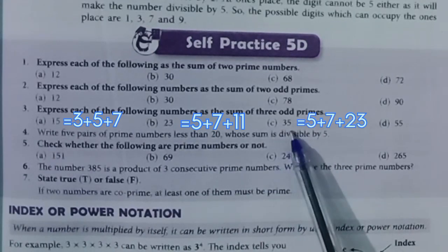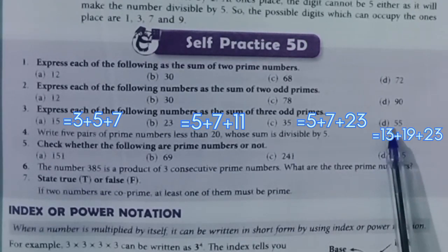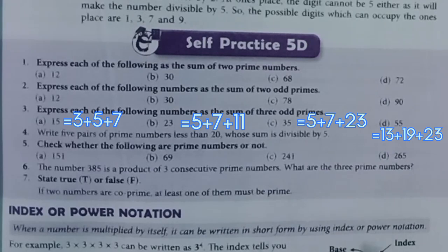C. 5 plus 7 plus 23. D. 13 plus 19 plus 23.